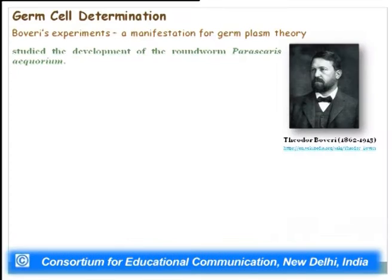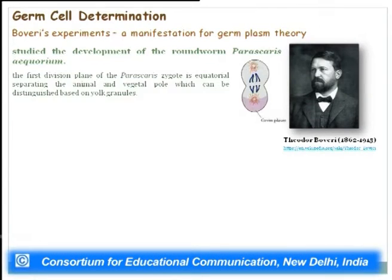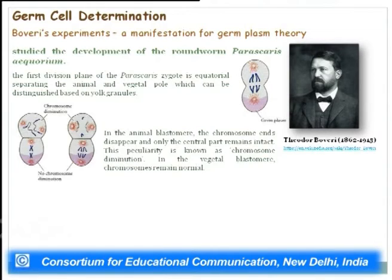The first division plane of the Parascaris zygote is equatorial, separating the animal and vegetal poles distinguishable by yolk granules. In the animal blastomere, chromosome ends disappear and only the central portion remains intact — chromosomal diminution occurred. In the vegetal blastomere, however, chromosomes remained normal.